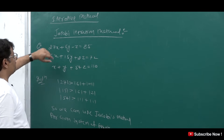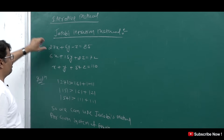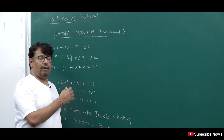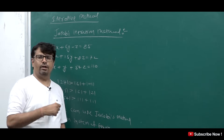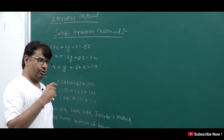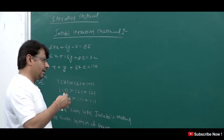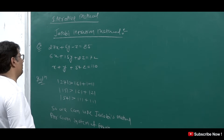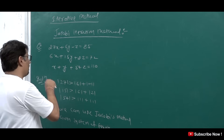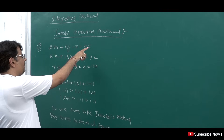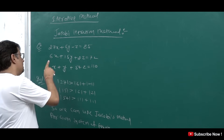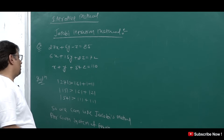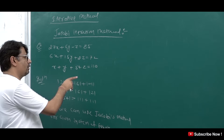Now in the iterative method, first of all, what is the Jacobi iteration method? In the Jacobi iteration method, the first question here is: 27x + 6y − z = 85, then 6x + 15y + 2z = 72, and x + y + 54z = 110.